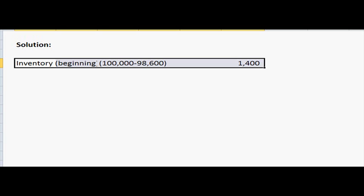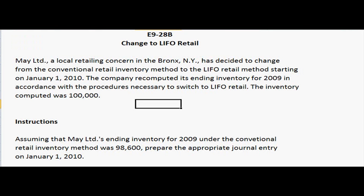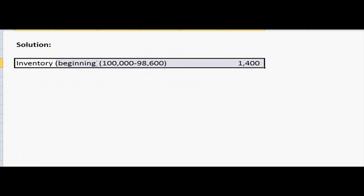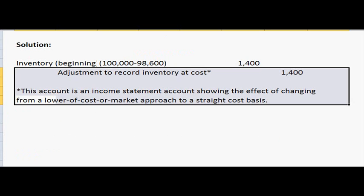So we're going to debit inventory — the beginning inventory — for 1,400, because we're taking the 100,000 minus the 98,600. The computed inventory was 100,000 and the conventional inventory was 98,600. Then we credit the adjustment to record inventory at cost for the 1,400, which is an account on the income statement showing the effect of changing from a lower of cost to market approach to a straight cost basis.